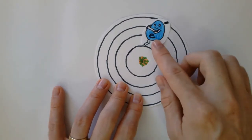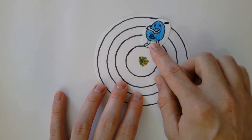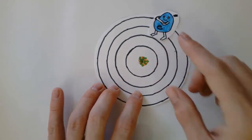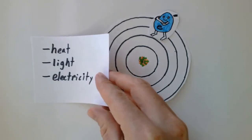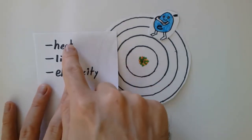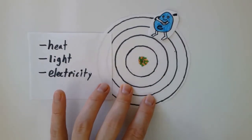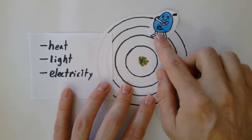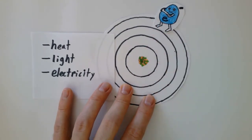The electron starts at the innermost level and as it gains energy it's able to move outwards. There are three main ways an electron can gain energy: heat, light, or electricity. These provide the energy the electron needs to move to an energy level that's further away — a higher energy level.